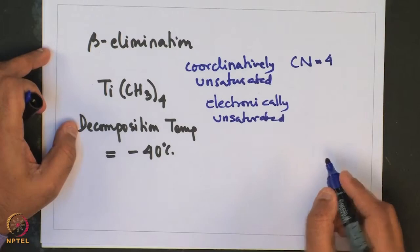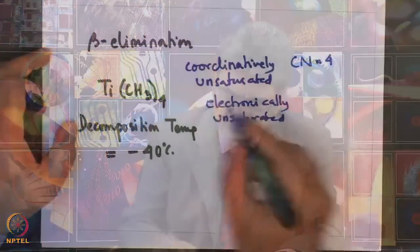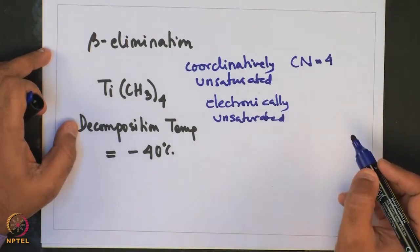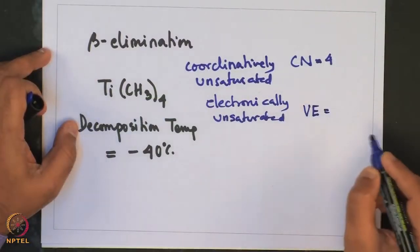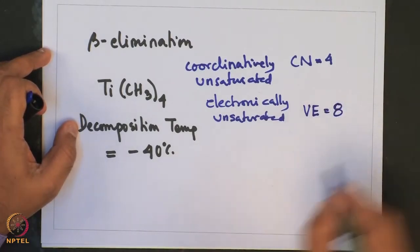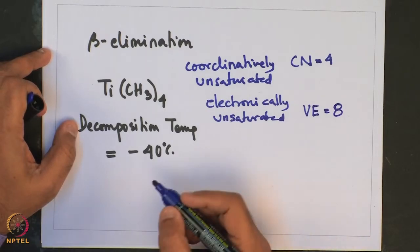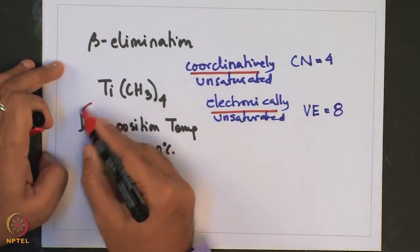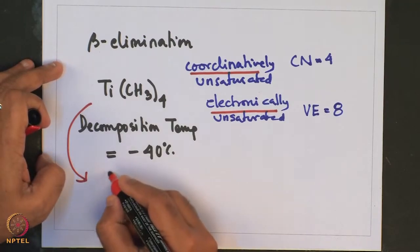Most transition metals exhibit coordination numbers as high as 6, so titanium tetramethyl is coordinatively unsaturated. It is also electronically unsaturated, having a total of only 8 valence electrons, as opposed to the 18 valence electron rule obeyed by most transition metal complexes. Because of this extensive unsaturation — both coordinative and electronic — titanium tetramethyl decomposes by a bimolecular pathway.